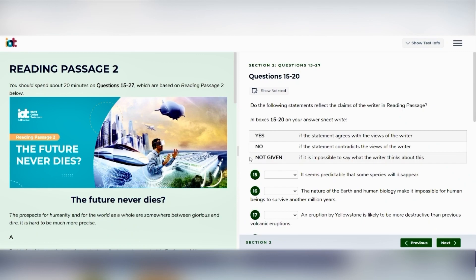The trick of answering yes, no, not given or true false not given questions is that a statement is yes or true if it 100% agrees to the views of the writer and is more likely to be clearly mentioned in the passage. A statement is considered false or no if it completely contradicts with the views of the writer. Whereas a statement is considered not given if and only if you cannot make a 100% yes, no decision about that after reading the passage.